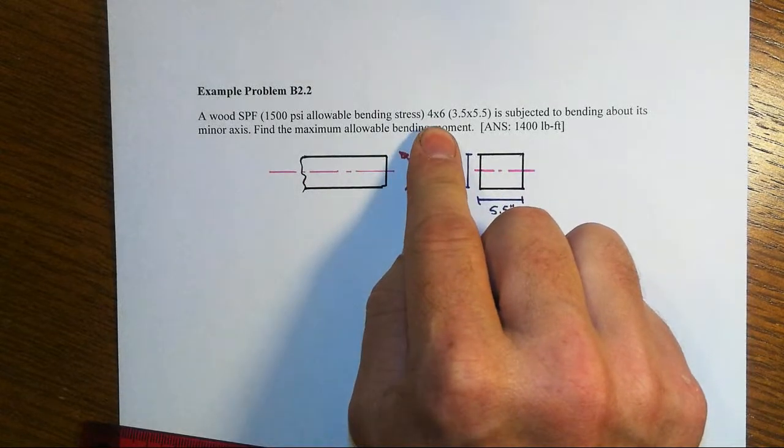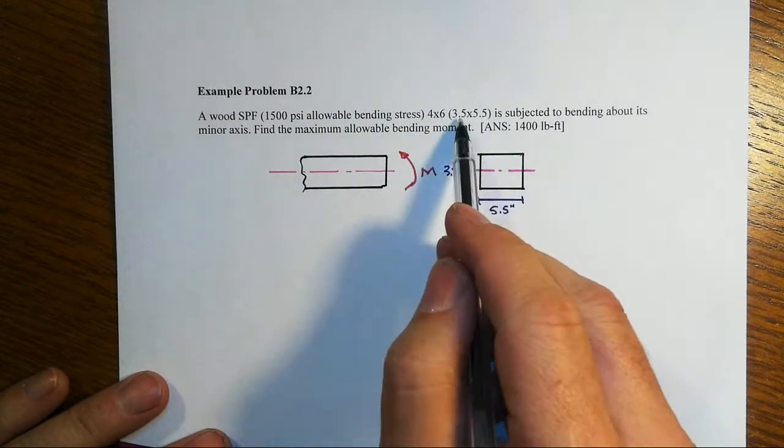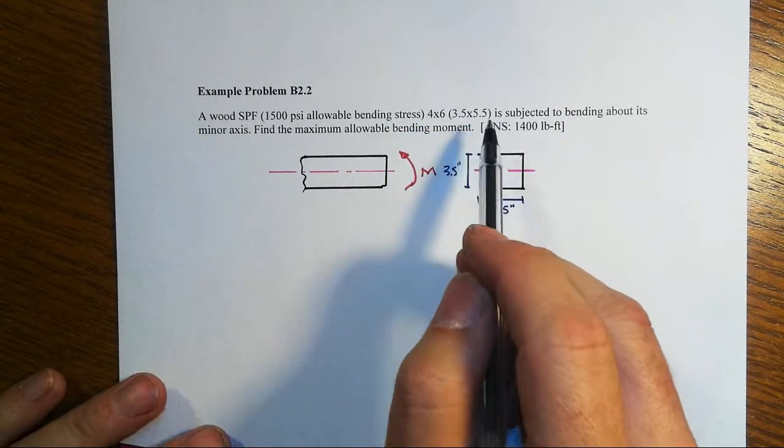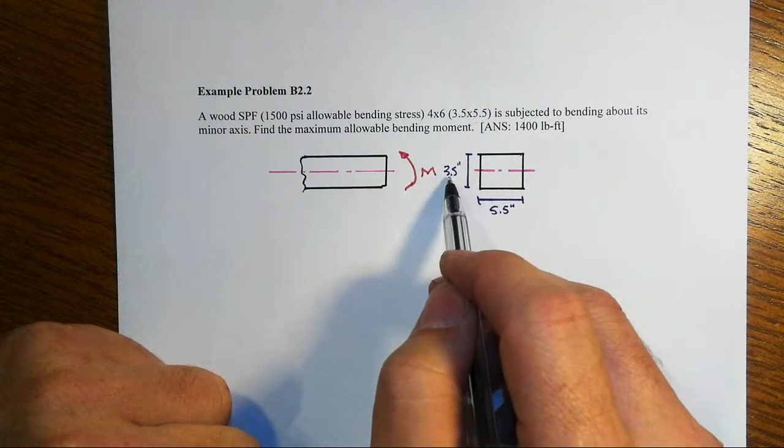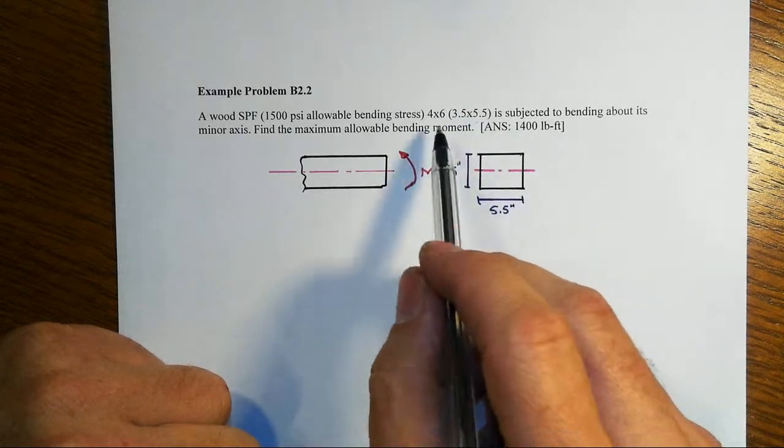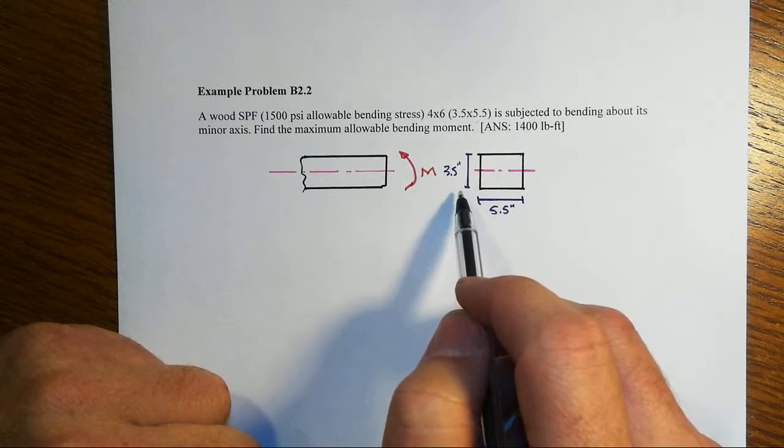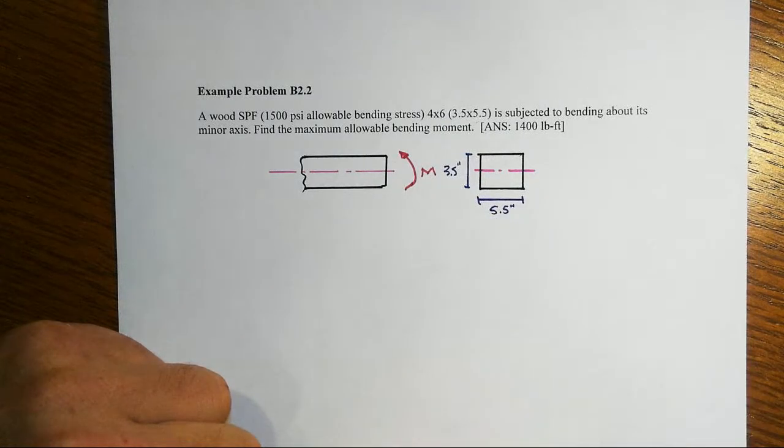When you start dealing with wood, the 4x6 is usually rough dimension. The actual dressed dimension after you shave it down and make it nice and clean is smaller, so 3.5 by 5.5 inches here are dressed dimensions. You call that a 4x6, but after dressing it's 3.5 by 5.5 inches.